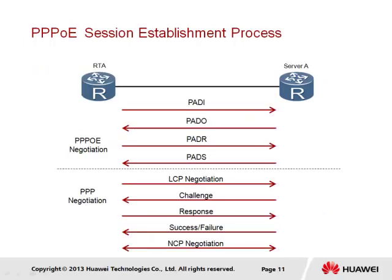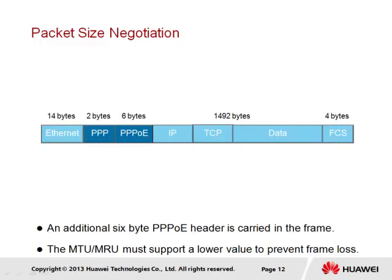Following the discovery stage, the PPP session stage begins, following the same PPP process starting with LCP negotiation and proceeding through authentication and network phases. A key consideration with PPPoE is the extra payload overhead incurred. The maximum supported packet size is typically 1500 bytes; however, including the additional PPP and PPPoE header information adds 8 bytes, causing fragmentation. It is therefore necessary that the maximum receive unit be set to 1492 bytes to limit packet size and accommodate the additional overhead.